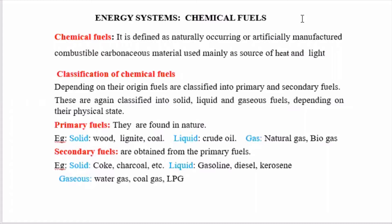Non-renewable energy sources are again classified into two types: fuels and non-fuels. Fuels produce energy by combustion — examples include wood, charcoal, and petrol. Non-fuels produce energy without combustion — example: nuclear energy. An important property required for a chemical fuel is that it should undergo combustion, and the major element present in a chemical fuel is carbon. Hence, the definition of chemical fuel: it is a naturally occurring or artificially manufactured combustible carbonaceous material used mainly as a source of heat and light.